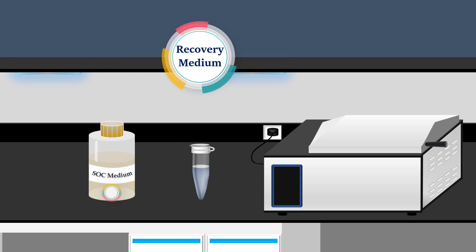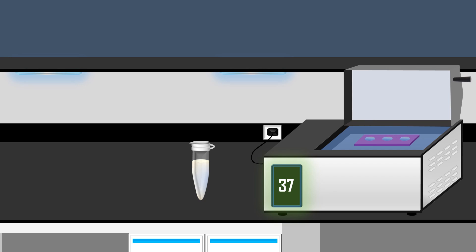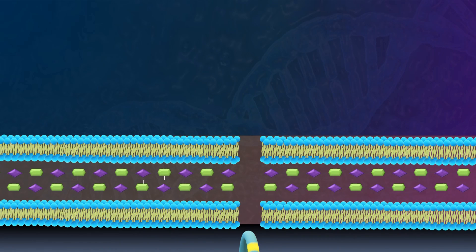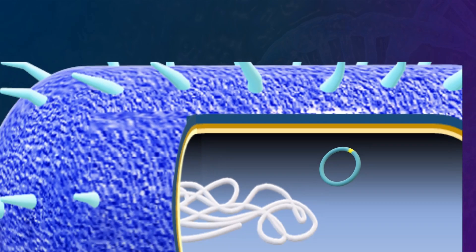Once the transformation steps are completed, the tube is removed, and a recovery medium enriched with amino acids, vitamins, and sugars is added to the treated bacterial cells. Then the tube is incubated at 37 degrees Celsius for 1 hour. The SOC nutrient-rich environment is designed to create a conducive setting for cell recovery.